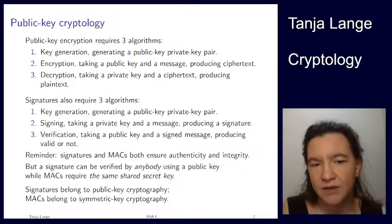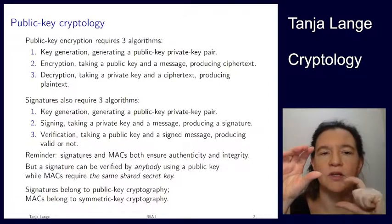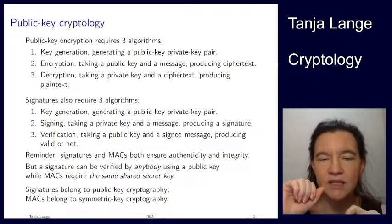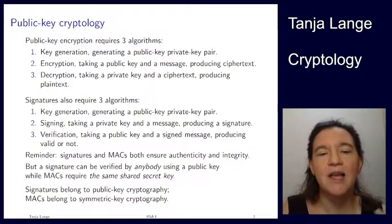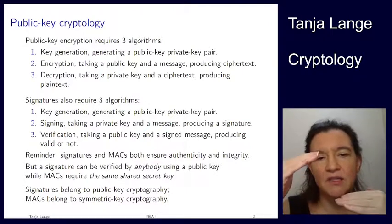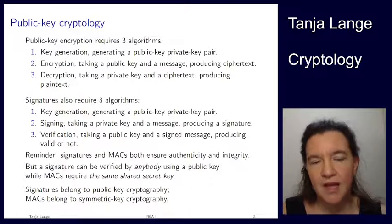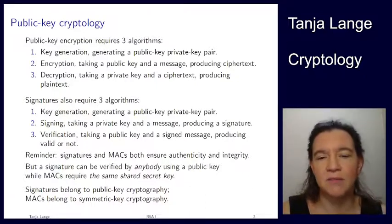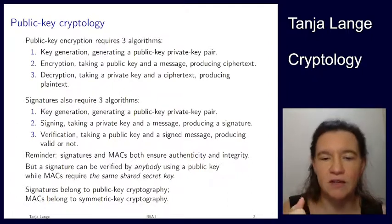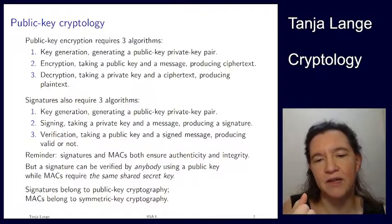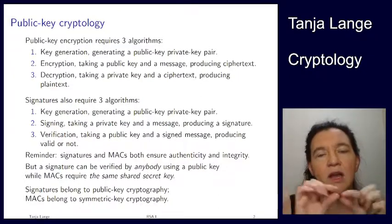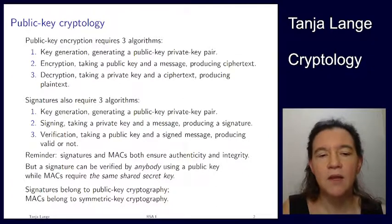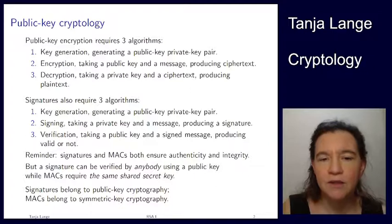For signatures, we also have key generation, then signing and verification. Normally, public key encryption and public key signatures share some mathematical ideas but typically have very different shapes. RSA is exceptional in that those two are very analogous, but normally they're not. Both signatures and MACs achieve authenticity and integrity, but they have different data flow: anybody can verify a signature using the public key, whereas for MACs, verification uses a secret key shared between both parties. So signatures belong to public key cryptography and MACs to symmetric key cryptography.